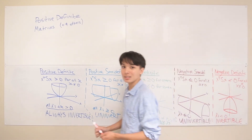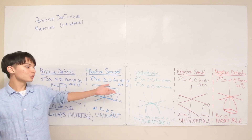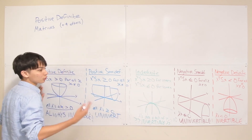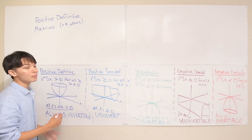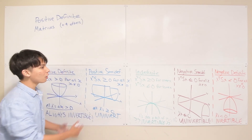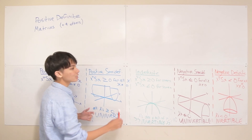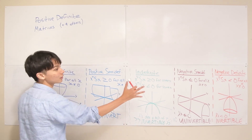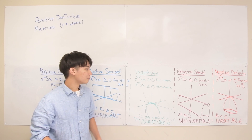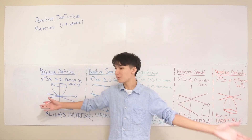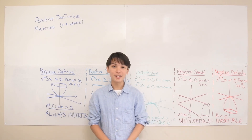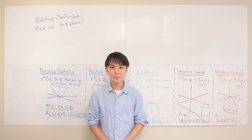Those are the five classes of symmetric matrices. The summary: we like the definites — positive definite and negative definite — because they're always invertible. We especially like positive definite because it has a minimum, which is useful later. Positive semi-definite and negative semi-definite are generally un-invertible unless they happen to be definite. Indefinite is unpredictable. This will come in handy especially in the pseudo-inverse lecture in section 2.9.